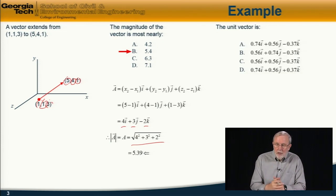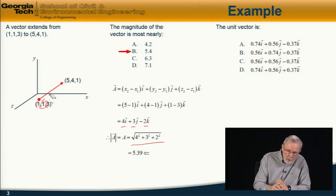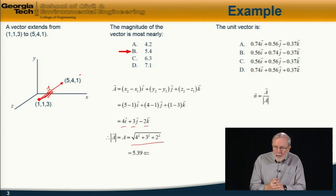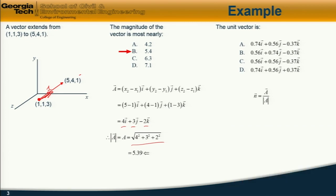Next question. The unit vector is which of these? So here what we want to find is a unit vector. In other words, a vector of length 1 extending between those two points. So the general definition of the unit vector n is equal to the vector itself divided by the magnitude of the vector. And these two things we already know. Here is the vector 4i plus 3j minus 2k.